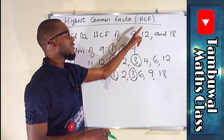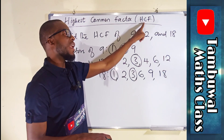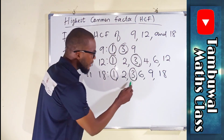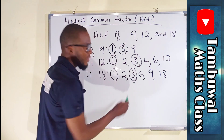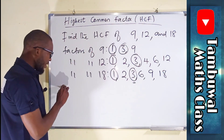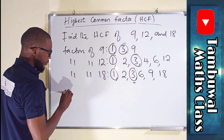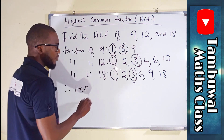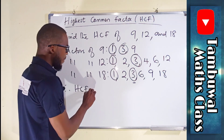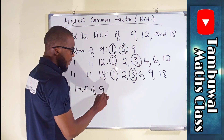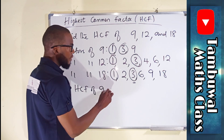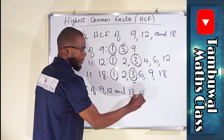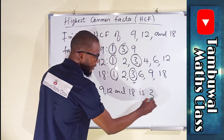Our next task is to find the highest common factor. We have two common factors — one and three — but the highest is three. Therefore, the highest common factor of nine, twelve, and eighteen is three.